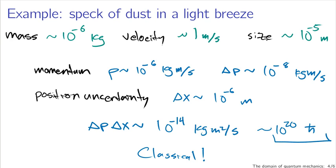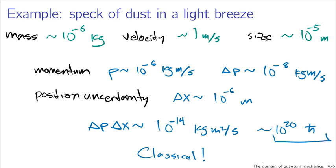So the smallness of something is something you may have to calculate until you get a feel for it. Quantum mechanics is most likely going to be important if you're dealing with single particles: atoms, molecules, single electrons, single photons, small systems of electrons and photons. It's also going to be very relevant if you're talking about semiconductors — the quantum mechanical properties of semiconductors are what makes them into such spectacularly useful electronic devices.